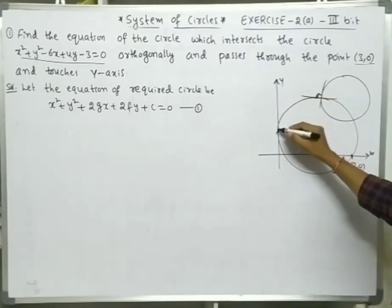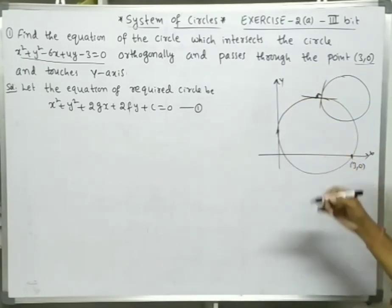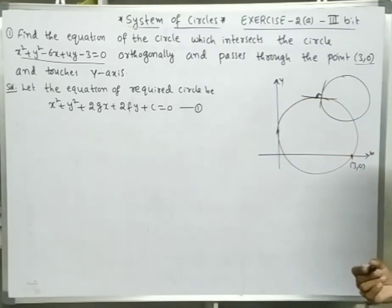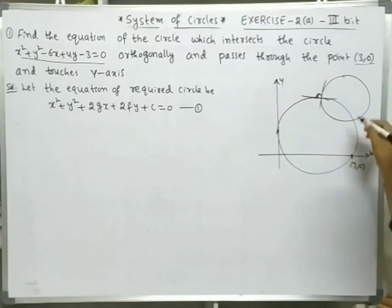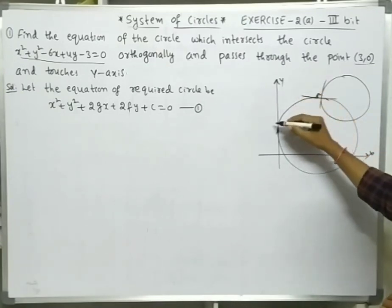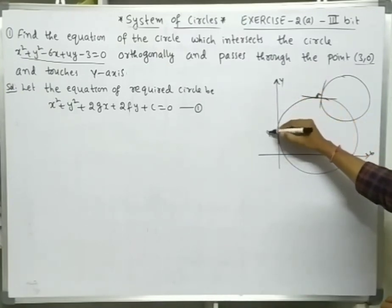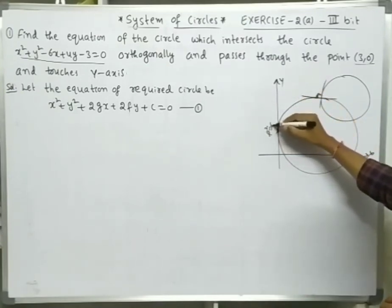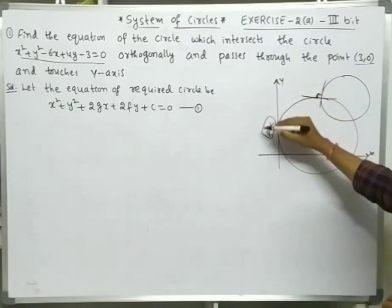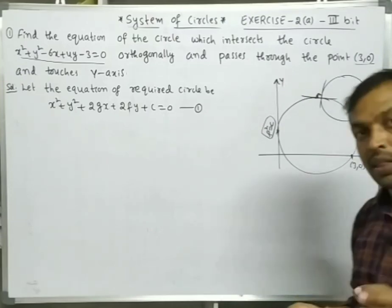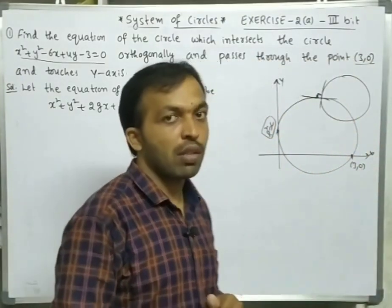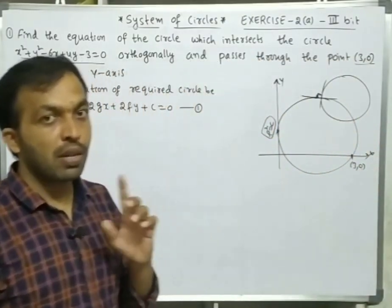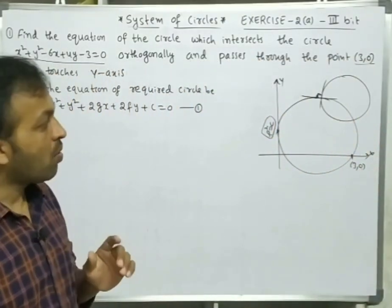So this is our required circle which is passing through (3, 0), touches the y-axis, and is orthogonal to another circle. Orthogonal means the angle between 2 circles is 90 degrees. Recall one condition we learned in the 1st chapter: if a circle touches the y-axis, then f² = c.